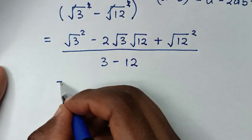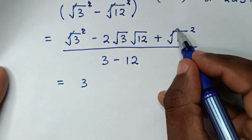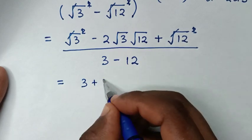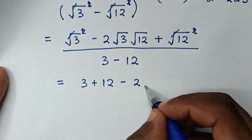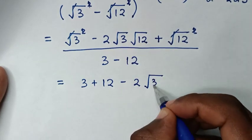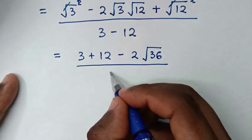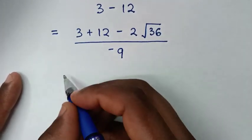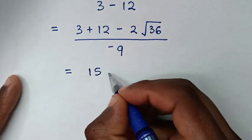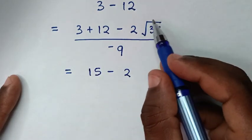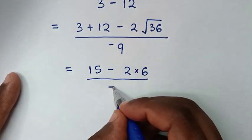In the next step: in the numerator, square root of 3 squared cancels to give 3, square root of 12 squared cancels to give 12, so we have 3 plus 12. Then minus 2 times square root of 3 times 12 — since square root of 3 times square root of 12 equals square root of 36. Over the denominator, 3 minus 12 is negative 9. So 3 plus 12 is 15, minus 2 times 6, over negative 9.